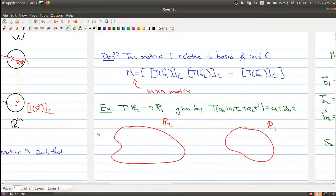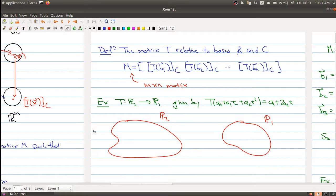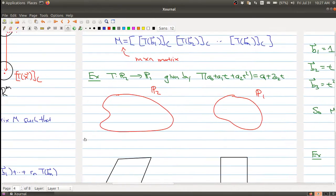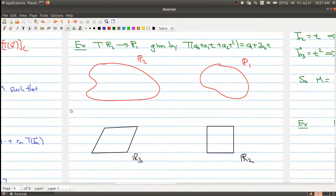So there's a lot of things floating around here, and it gets a little complicated because there's a lot of notation, but let me give you an example. So let's go to our example of differentiation. So we have a map going from P2 to P1, which takes a polynomial degree 2, and it takes its derivative.